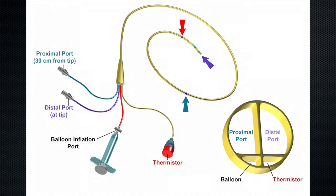The final lumen in this pulmonary artery catheter is used for the thermistor. The thermistor is an external coil on the catheter approximately 4 cm from the distal tip. It is used to measure core blood temperature within the pulmonary artery and is a key tool in the measurement of cardiac output by the thermodilution method.